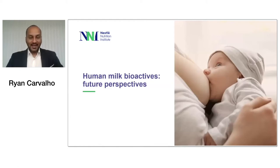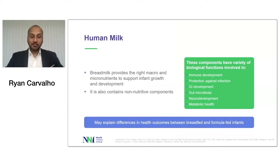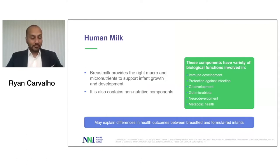Hello. Today, we're going to talk about human milk bioactives, but really looking at what tomorrow holds, and we'll talk about future perspectives. What we do know is that breast milk provides the optimal levels of macro and micronutrients to support infant growth and development. Over the years, the well-established paradigm holds true for the future: that breastfeeding and breast milk is the best way to feed a child.